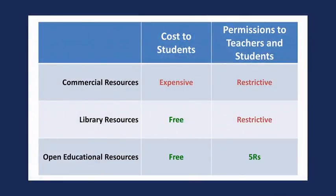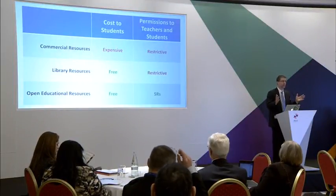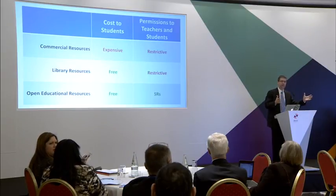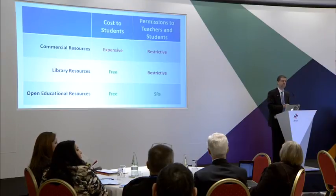When we think about all the different types of resources universities use, they use a whole mix — not just commercial resources, not just OER, not just library resources. But when you think about the cost to students and the legal permissions to do the 5R activities, the benefit of open educational resources is that digital versions are free for students. Printed versions are not free — there's a cost to print — but the cost for a printed textbook can be brought down to approximately 7 to 10 euros, compared to what students were paying before.